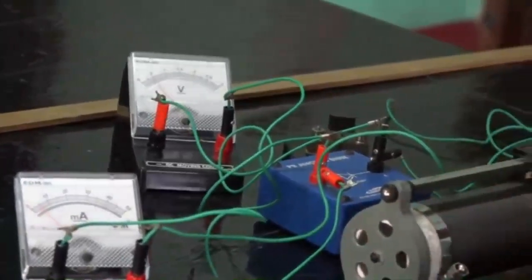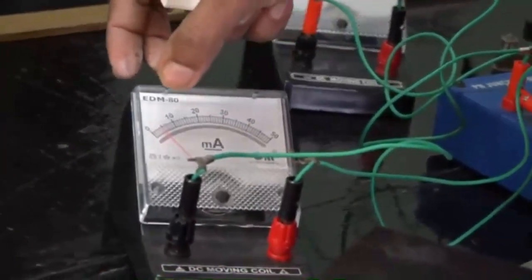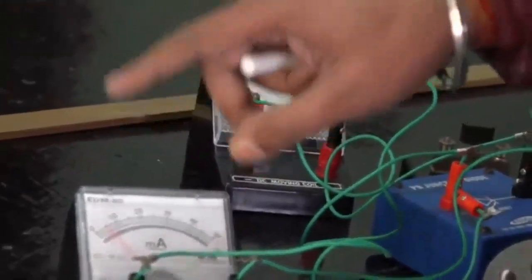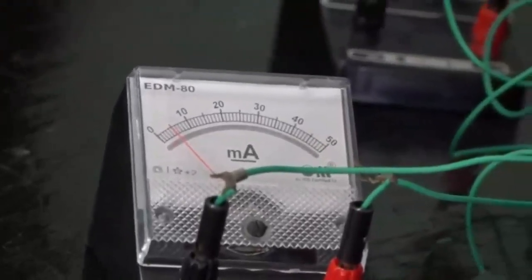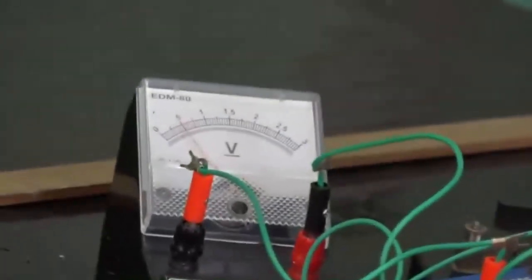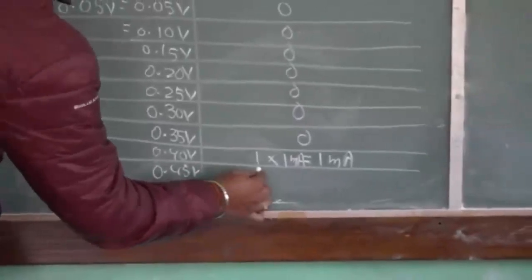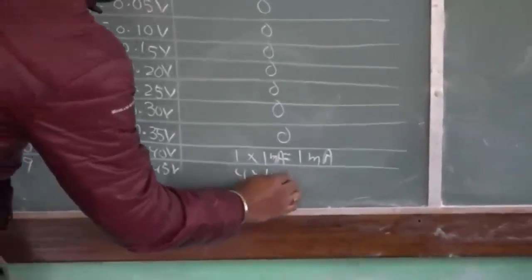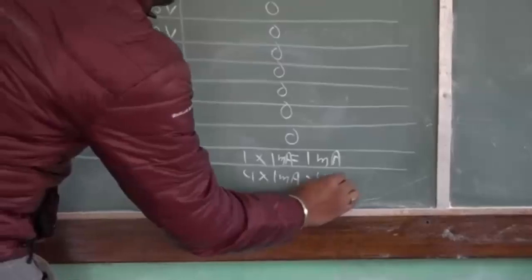For the 9th division in the voltmeter, the milliammeter reading is getting faster. In the 8th division we had only 1 division in the milliammeter, but for this 9th division in the voltmeter we are having 4 milliamperes in the circuit.